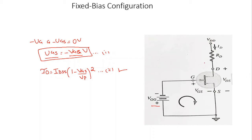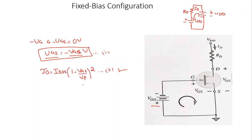The output circuit can be redrawn with VDD as a positive voltage supply, RD carrying drain current ID, and VDS as the voltage drop across the transistor. Applying KVL to the output circuit: −VDD + ID·RD + VDS = 0. This gives us the equation for the output circuit.